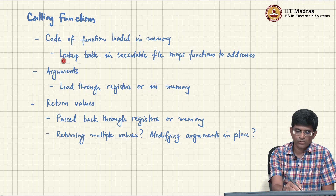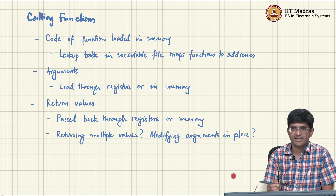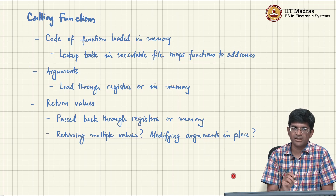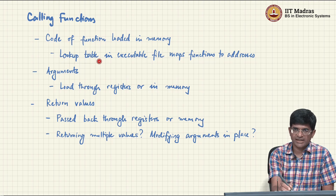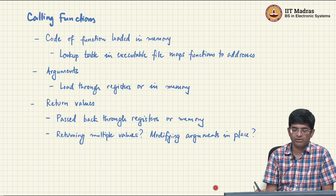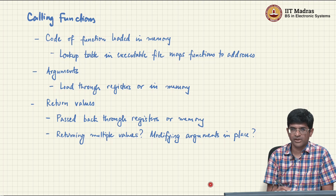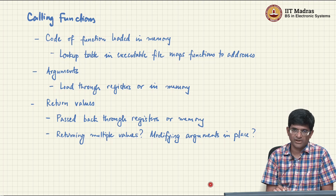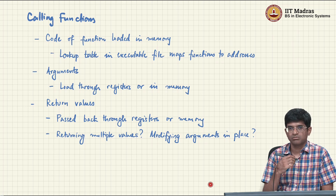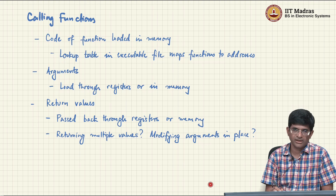Within the code there is typically a lookup table that says, for example: if you want the printf function look at this address, if you want the scanf function look at this address, if you want the square root function look at this address. These lookup tables are maintained as part of the executable file and tell us the address in memory where the instructions of each function are, meaning we branch there and run the code.